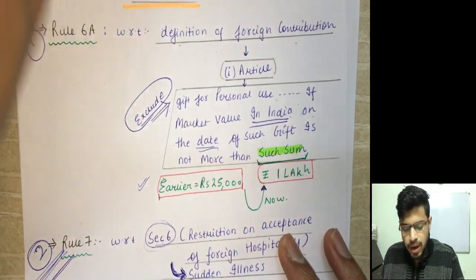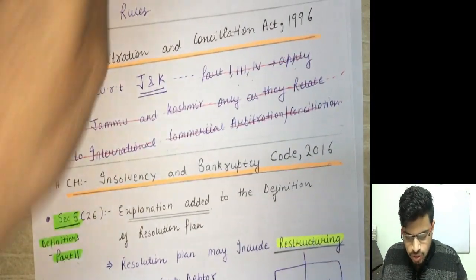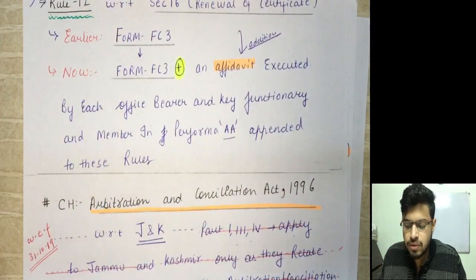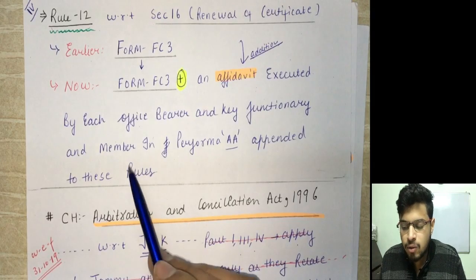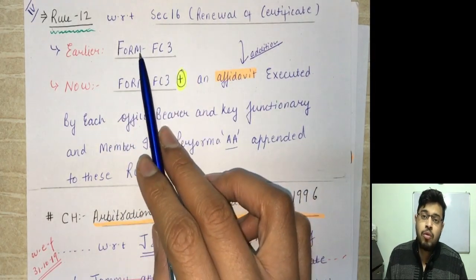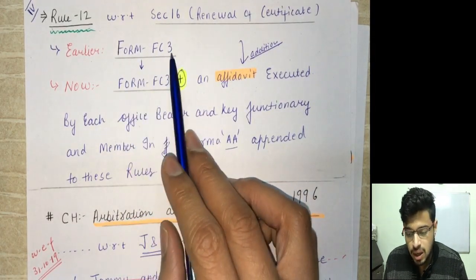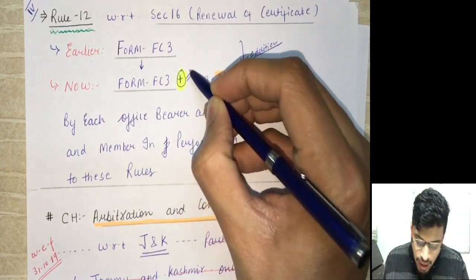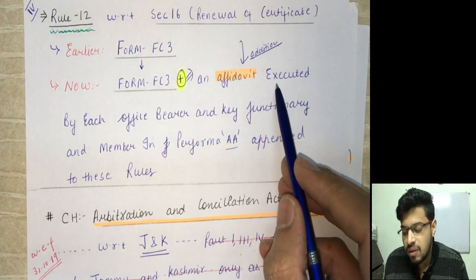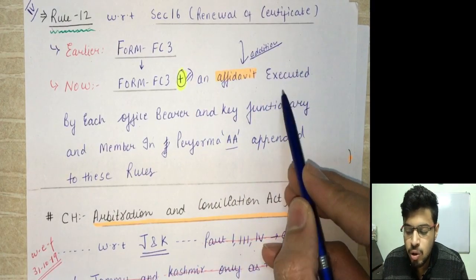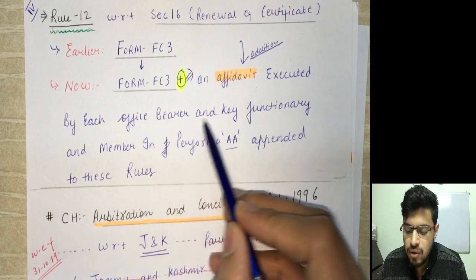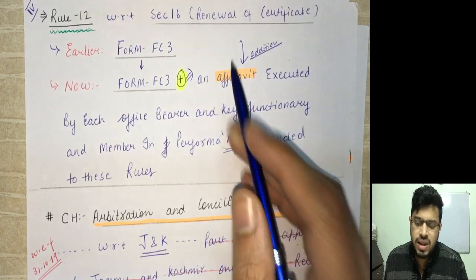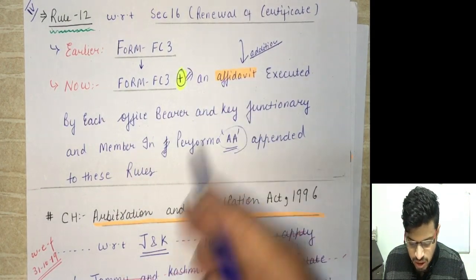The next amendment is in Rule 12, associated with section 16, which deals with the renewal of certificate. Earlier, for renewal you had to file Form FC-3; now you still file Form FC-3, but the change is that an affidavit must be executed by each office bearer, key functionary, and member in the form appended to these rules. This is a procedural change — you now have to give an affidavit along with the renewal application.